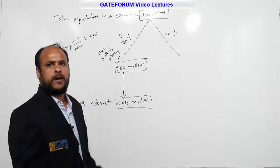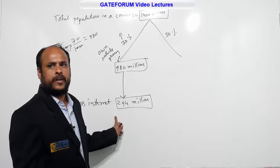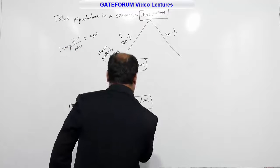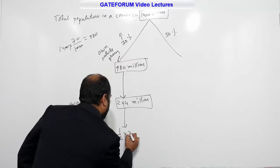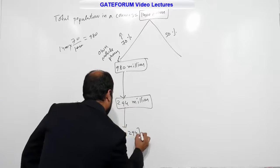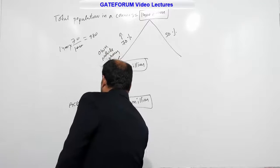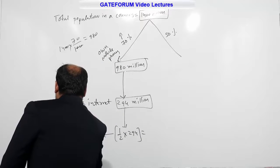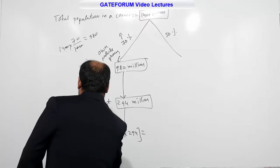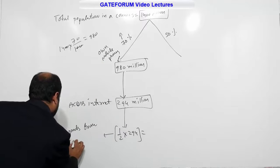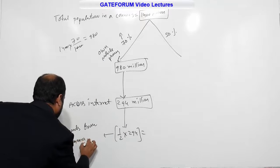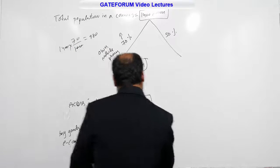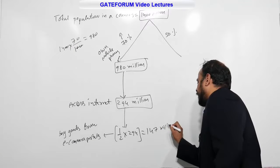One more statement is given: among these internet users, only half buy goods from e-commerce portals. So, 1/2 of 294 million gives the number of buyers buying goods from e-commerce portals, which equals 147 million.